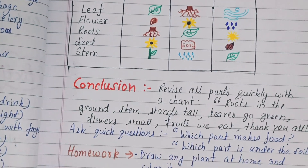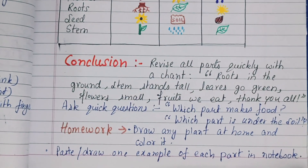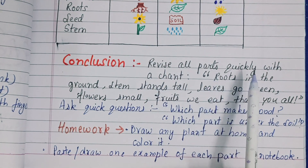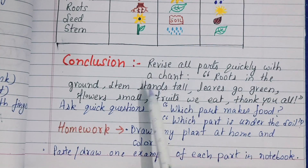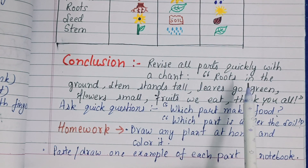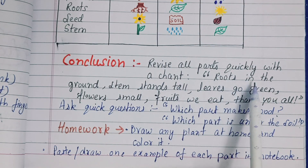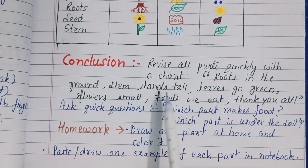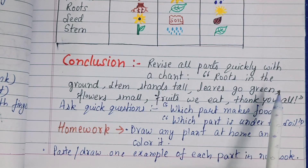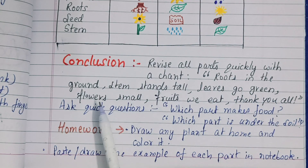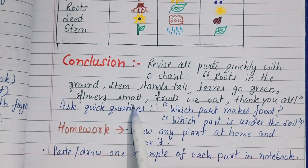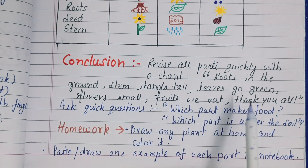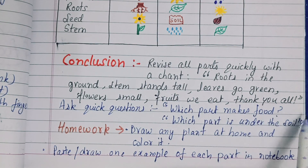Conclusion: revise all parts quickly with a chant — 'Roots in the ground, stem stands tall, leaves go green, flowers small, fruits we eat, thank you all.'